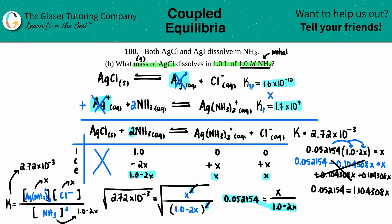Solve for x by dividing by 1.104308. This cancels, and now we get x equals 0.052154 divided by that number.